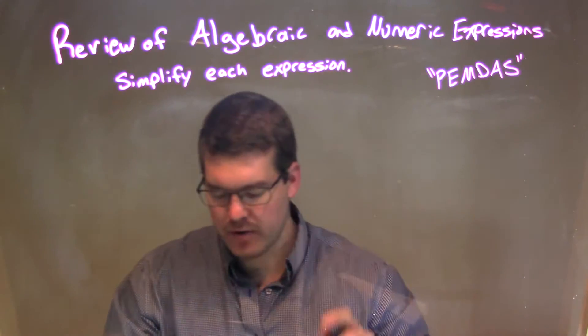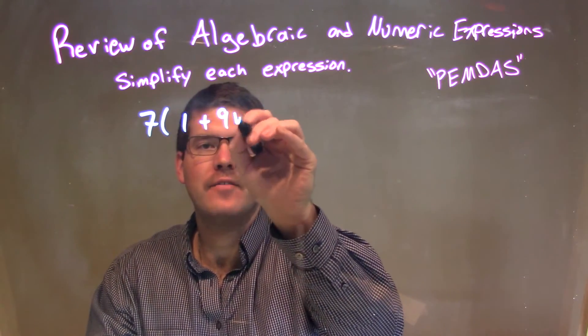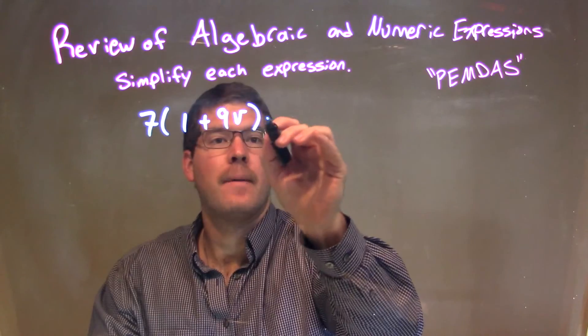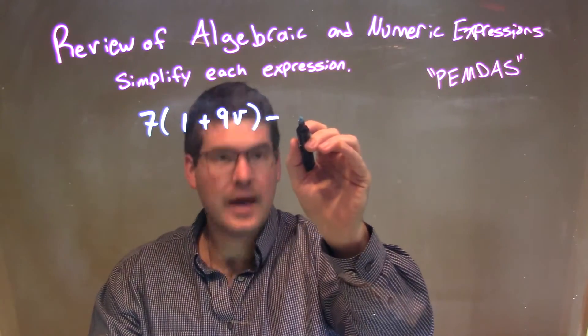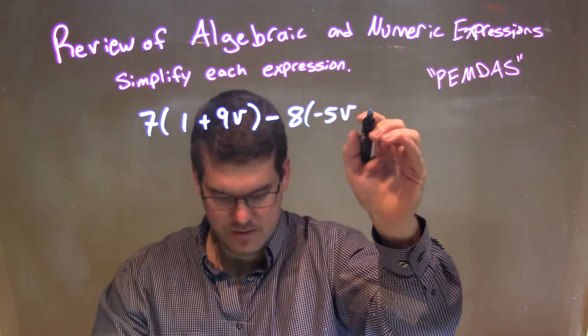So, finally, let's give you this expression: 7 times (1 plus 9b) minus 8 times (negative 5b minus 6).